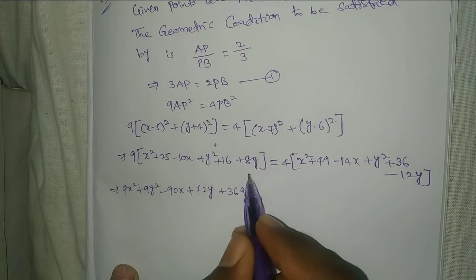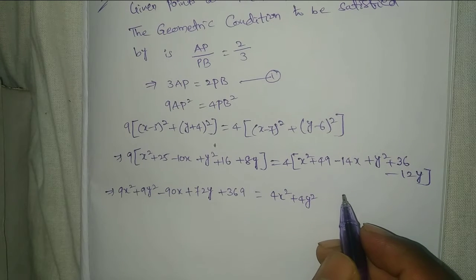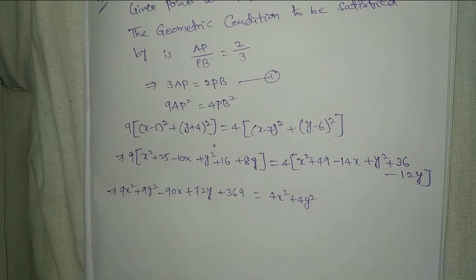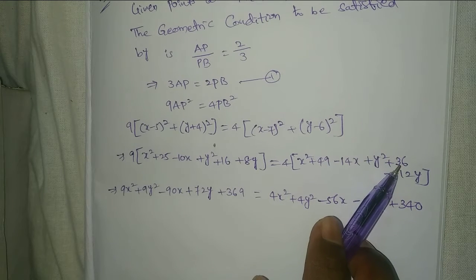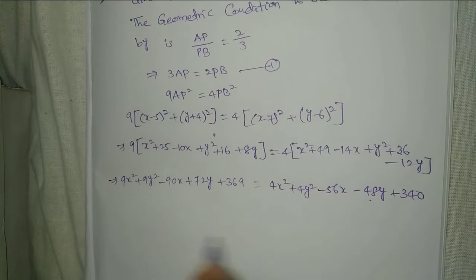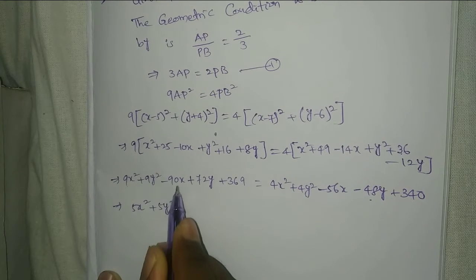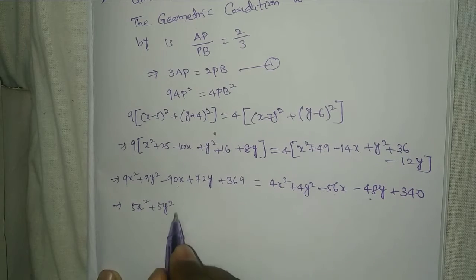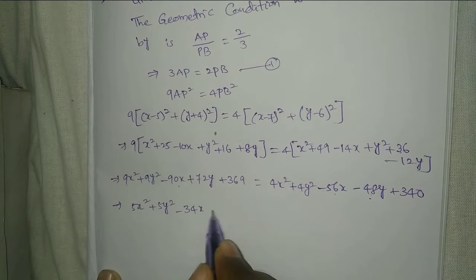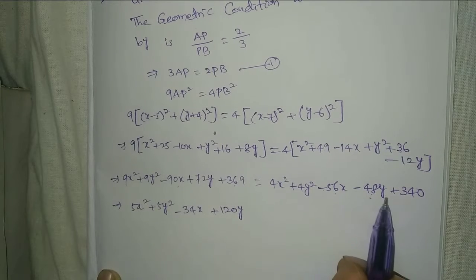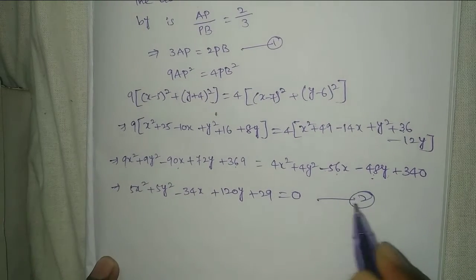Equal to 4x² + 4y² - 56x - 48y + 340. Collecting terms: 5x² + 5y² - 34x + 120y + 29 = 0. This is equation number 2.